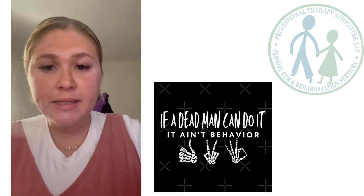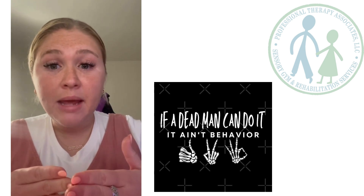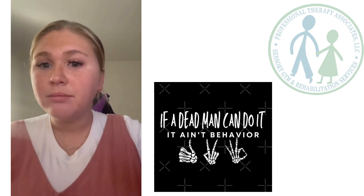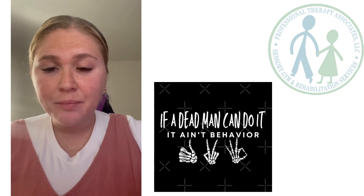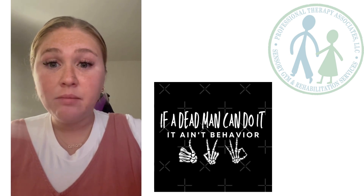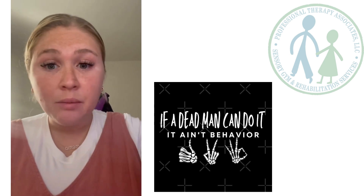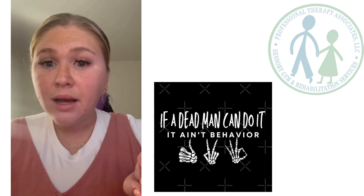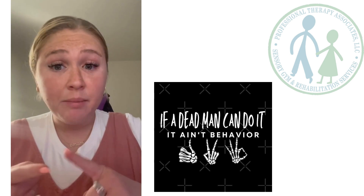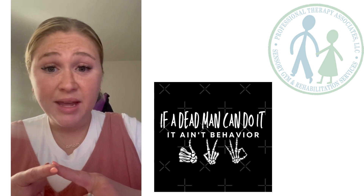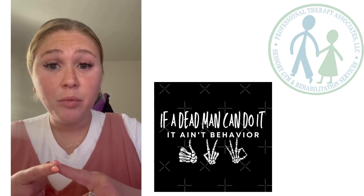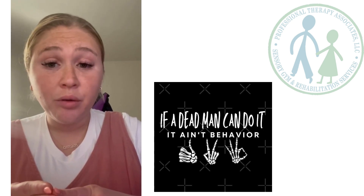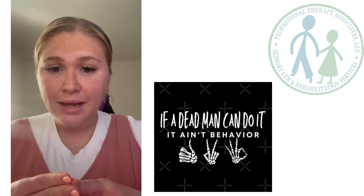So let's talk about some examples. A dead man cannot put tokens on a token board — that's a behavior. A dead man cannot hit someone — that's a behavior. But a dead man can be quiet — that's not a behavior. Or a dead man can get blown over by the wind — also not a behavior.